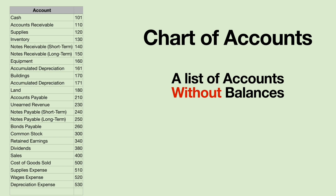A chart of accounts is simply a list of all the accounts that a business will use without their balances, but they do show their numeric names. Human beings speak English and refer to accounts by their English names — cash, accounts receivable, supplies — but the computer likes to think of these accounts with numeric names.